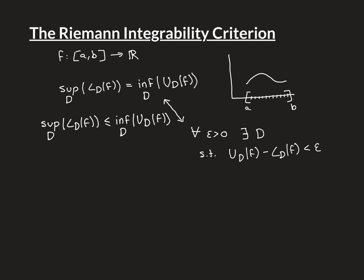For a function, whether it's Riemann integrable or not, the set of all lower Riemann sums is going to be bounded above, and it's going to be bounded above by any one of the upper Riemann sums. We've discussed how any lower Riemann sum is always going to be less than or equal to any upper Riemann sum. So this set of all lower Riemann sums is bounded above. Therefore, because this is the real line, it will have a least upper bound — the supremum will exist.